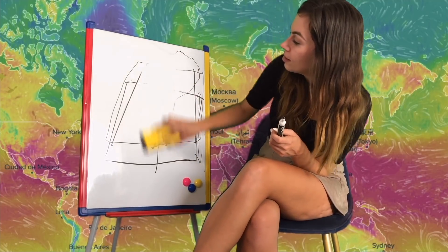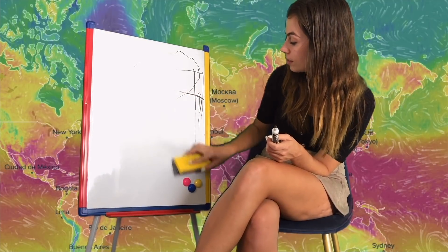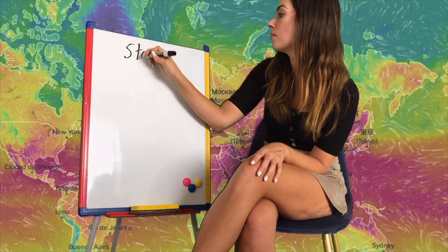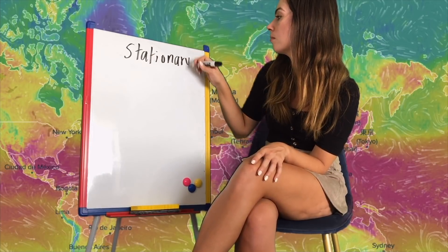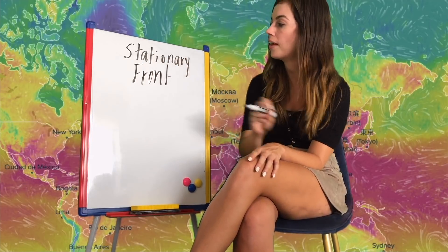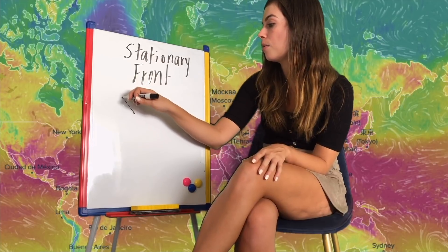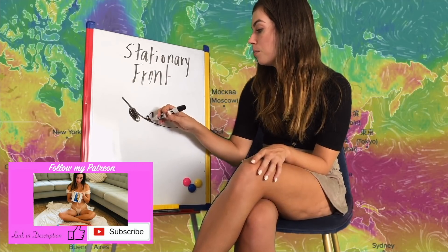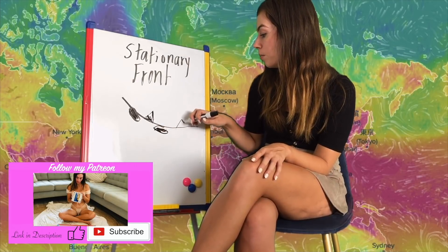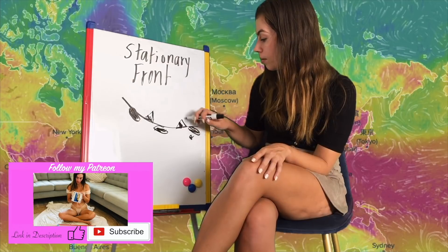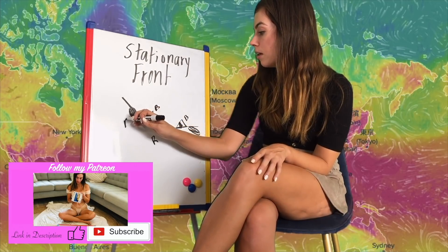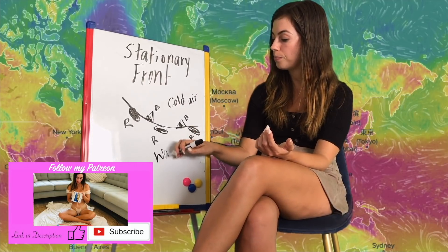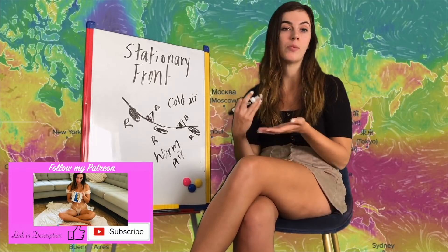The last type is a stationary front, which means the weather just stays the same and it's not going to change much. On a map, a stationary front alternates between red and blue symbols — cold air on one side and warm air on the other — with nothing really changing. Stationary means the weather is staying the same.